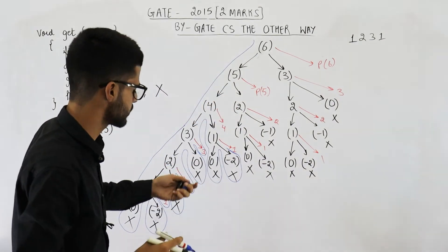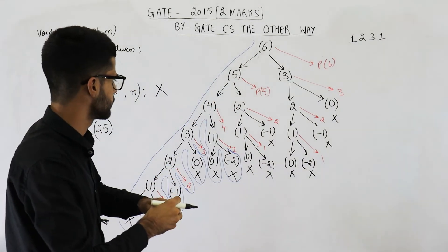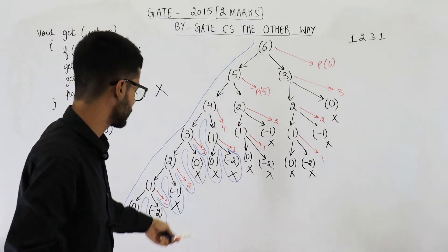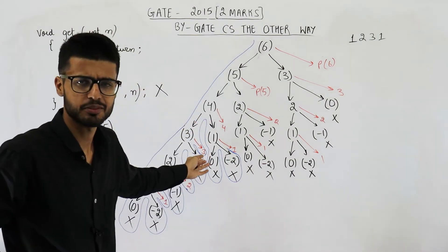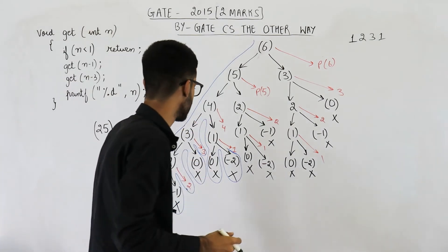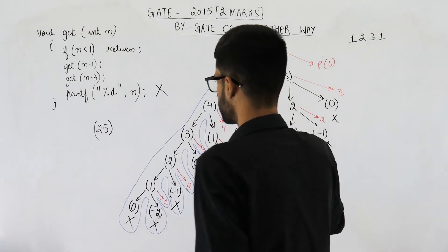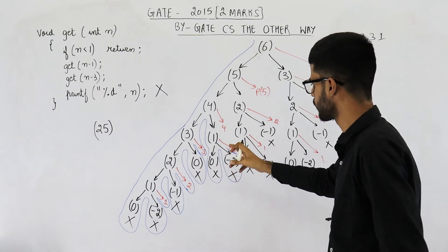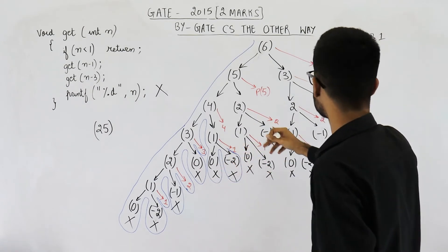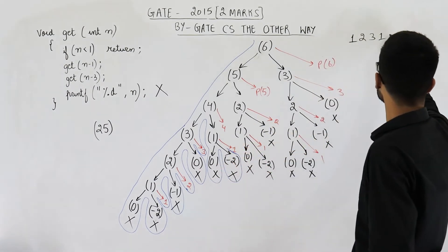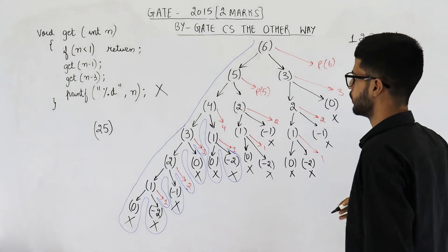So let me just complete it quickly. You can see the output will be 1, 2, 3. Then it will be 1, 4, 1.